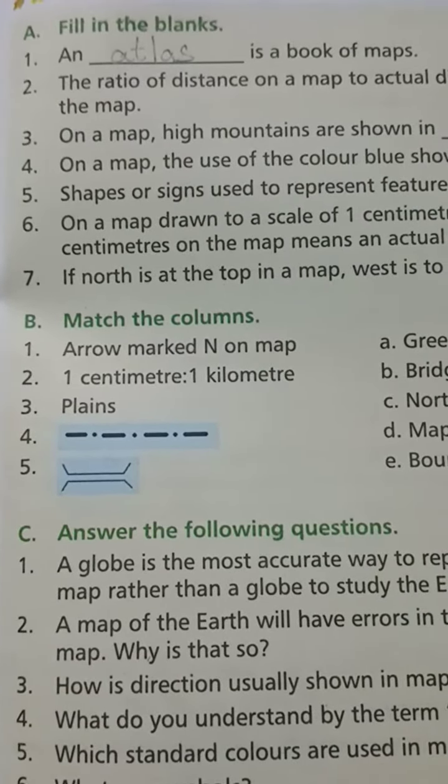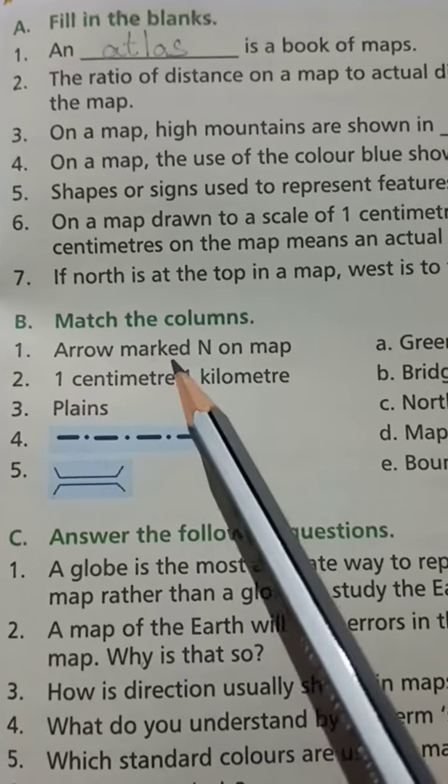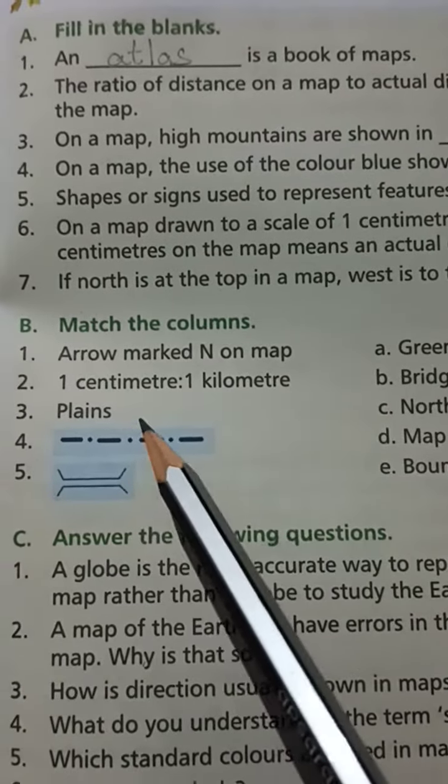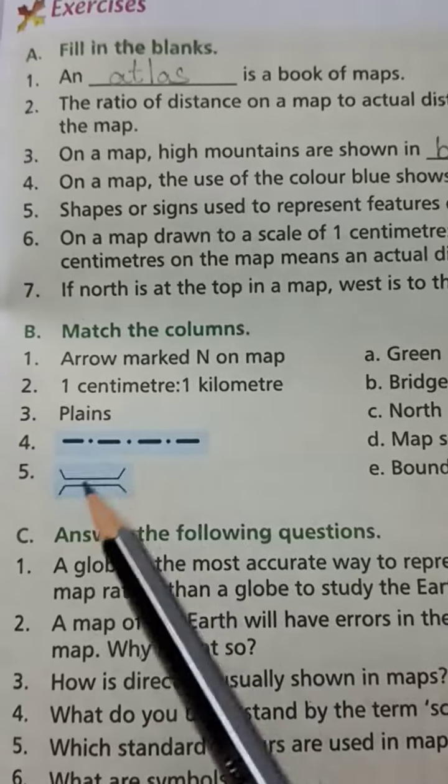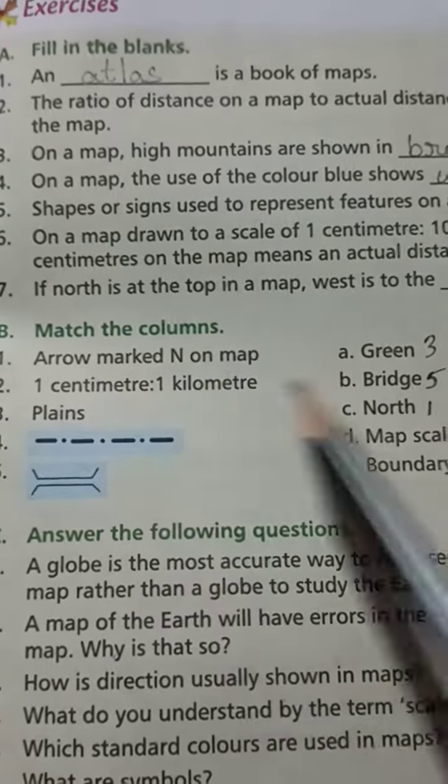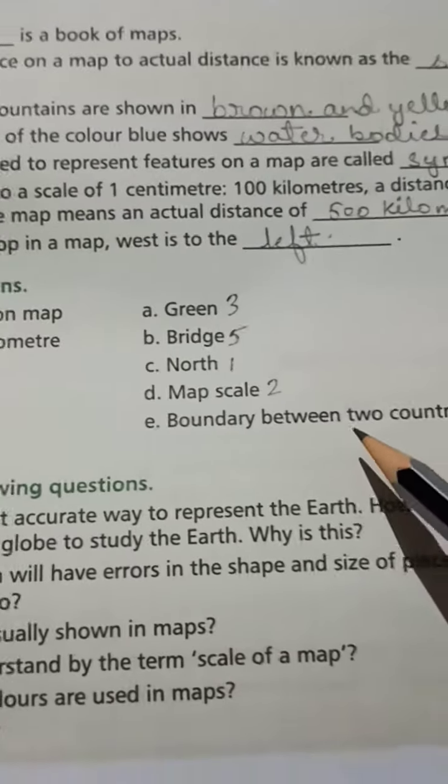Okay, question one: Arrow marked N on a map. Number two: One centimeter is to one kilometer. Number three: Plains. And number four: There is a dotted line. Number five: There is a line. So here are the options - A: Green, B: Bridge, C: North, D: Map scale, E: Boundary between two countries.